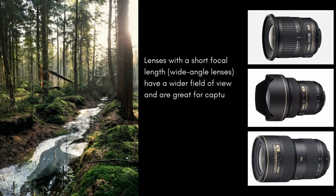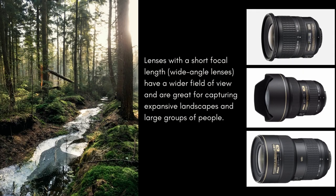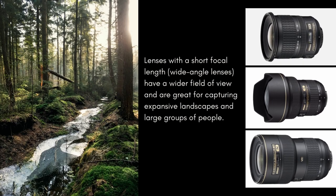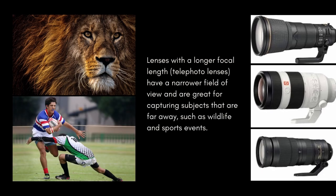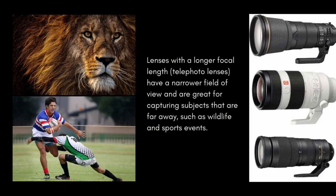Lenses with a short focal length — wide angle lenses — have a wider field of view and are great for capturing expansive landscapes and large groups of people. On the other hand, lenses with a longer focal length — telephoto lenses — have a narrower field of view and are great for capturing subjects that are far away, such as wildlife and sports events.